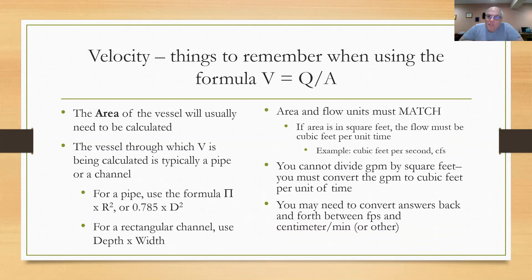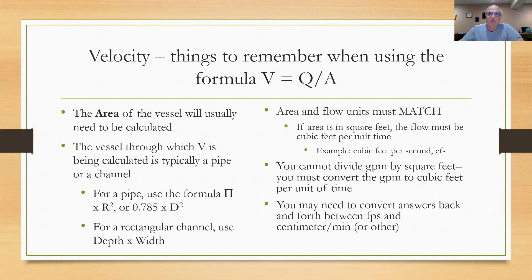In these equations, the area and the flow units have to match. If the area is in square feet, the flow has to be in cubic feet per unit of time, typically cubic feet per second or cubic feet per minute. You cannot divide gallons per minute by square feet. You got to convert first. In this case, convert the gallons per minute to cubic feet per unit of time. Your units of flow and area must match in order to do this equation.